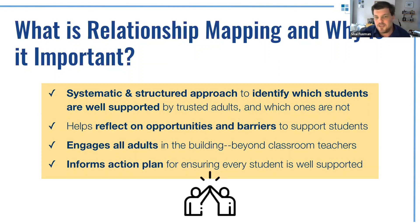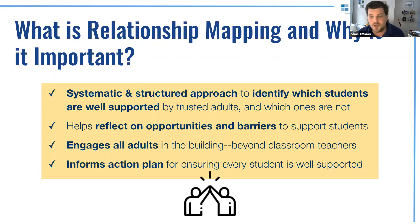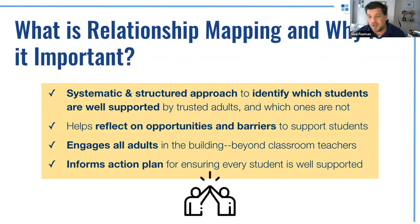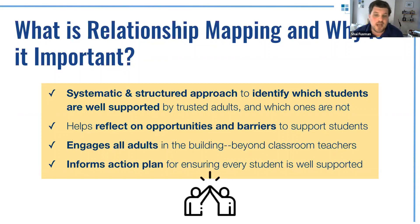At the end, what you have is a visual representation of who are the students who are very well supported by adults, who have strong relationships already, who might have only one or a couple of those relationships, and most importantly, who are the students who are not being supported by anyone.